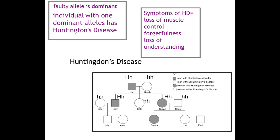On the bottom row, you have John, Alex, Joe and Paul who are all healthy and do not have the disease. And you have Emma, who is one sufferer. Her genotype — because her parents are Susan and Sean — she must have received the recessive small h from Sean. And because she actually has the disease, she must have received the dominant Huntington's allele from Susan.